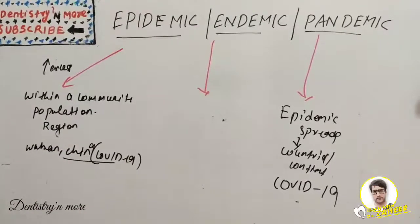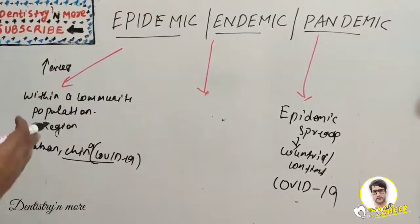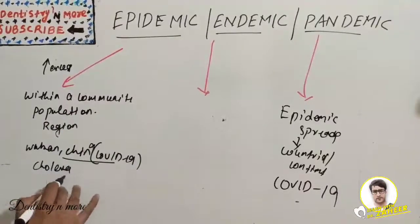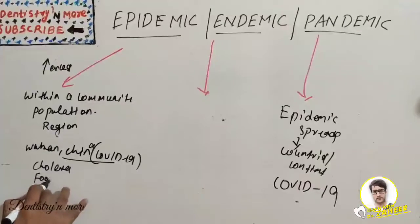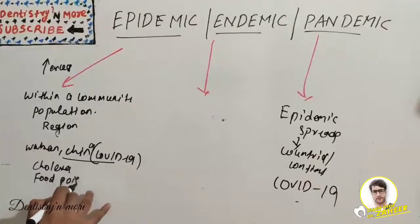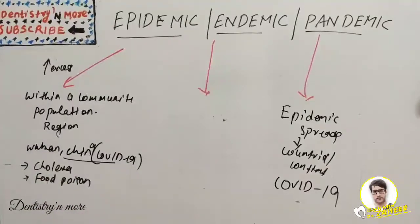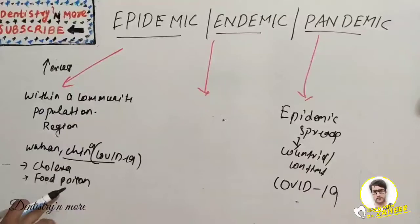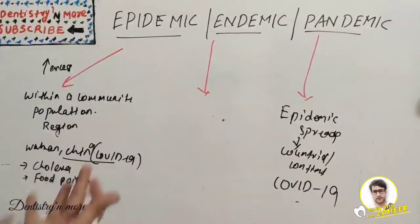An epidemic means actively spreading — new cases of the disease substantially exceed what is expected. Another example is the cholera epidemic or a food poisoning epidemic. Food poisoning was not expected, but suddenly a large number of cases emerge after a food poisoning incident at a hotel or a street food joint. That sudden increase over a very short period of time becomes an epidemic.